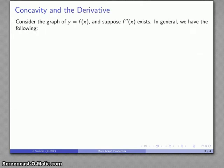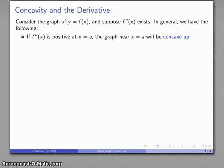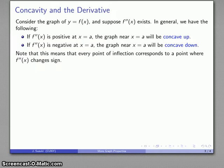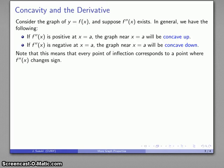Suppose the second derivative exists. If the second derivative is positive at some point, the graph in the vicinity of that point is concave up. If the second derivative is negative at a point, the graph is concave down. For an inflection point, the concavity must change from up to down or down to up — meaning the second derivative changes sign. Every inflection point corresponds to a place where the second derivative changes sign, and locating those points tells us where the inflection points are.